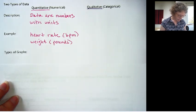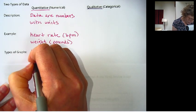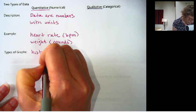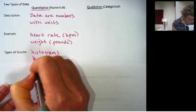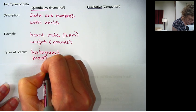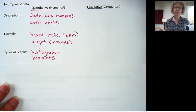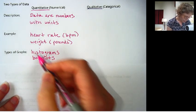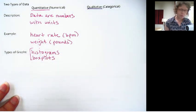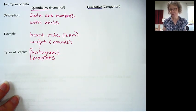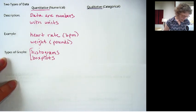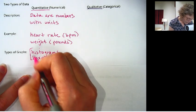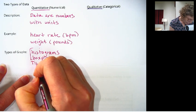Types of graphs that we have, we're going to look at histograms and box plots. Box plots will be a little bit later, but these two go together. We often will make these two graphs for the same set of data so that we can compare. And then the third one that we'll look at for types of graphs is called a time series plot.